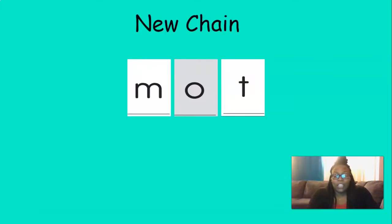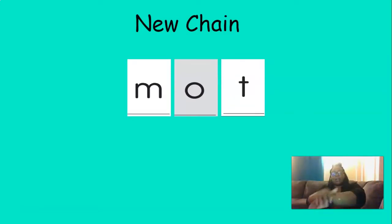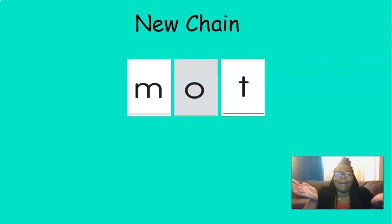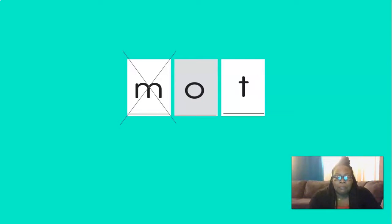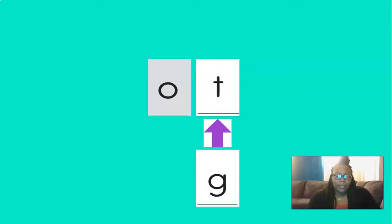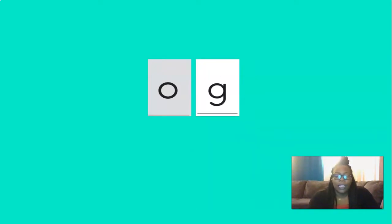Let's start a new chain of silly words, you ready? Let's blend these sounds to read the word. M-A-T, mat. What's a mat? It's such a silly word. So if we take the M off of mat, the new word is at. A-T. Very good. If we change the T to G, our new silly word is ag. A-G.